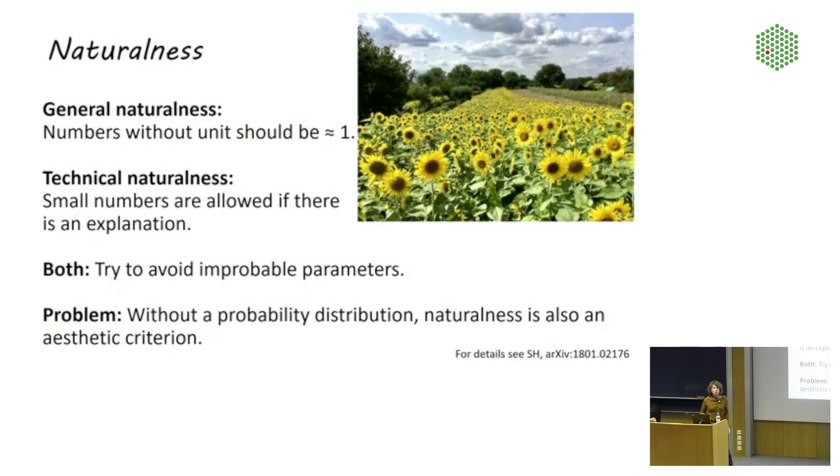And it's exactly this element of surprise that theoretical physicists associate with something that is unnatural. So in general, this notion of naturalness is that numbers without units should be of order one. So it's important that they actually be without units because if you have a number that has units, you can make it to be anything you want. In particle physics in particular, there is a more specific notion of naturalness, the so-called technical naturalness, according to which small numbers are allowed if there is an explanation for why they are small. An explanation for such a number can, for example, be a symmetry. So you get this trade-off between naturalness and symmetry.